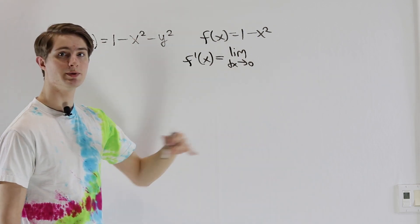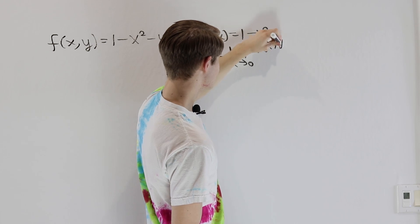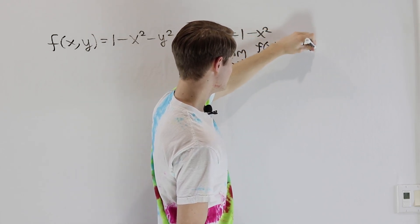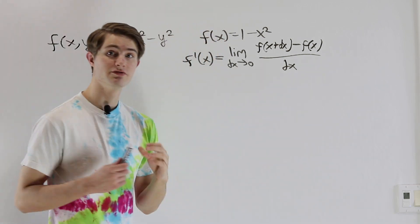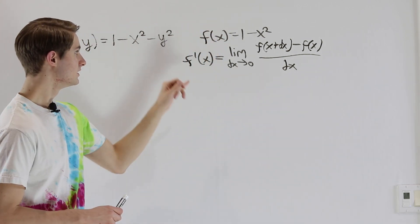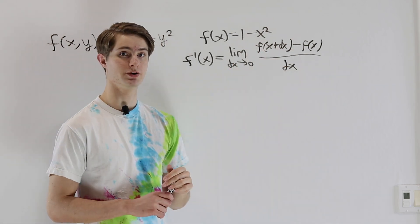So dx is just a very small change in x and we're seeing what happens to the slope of this line here as it approaches 0.